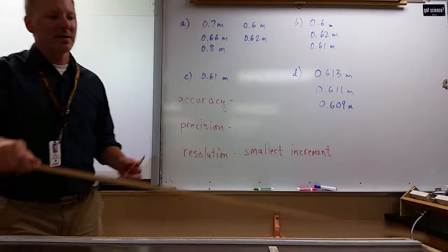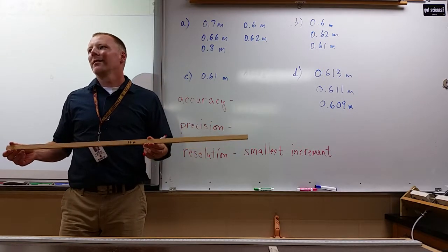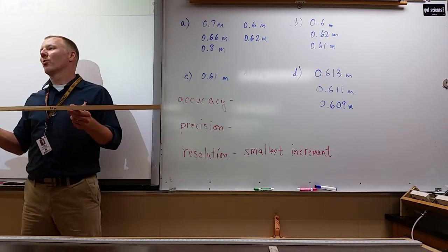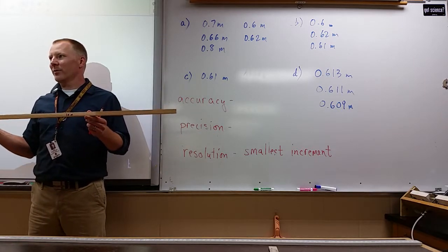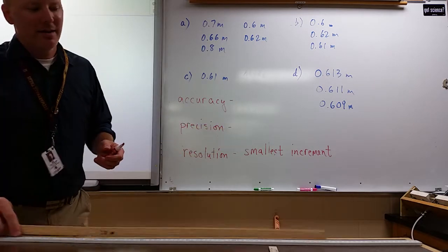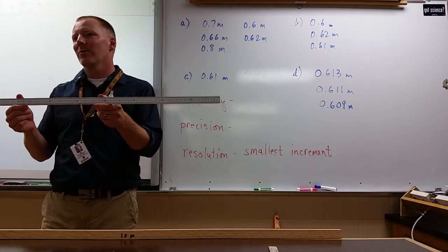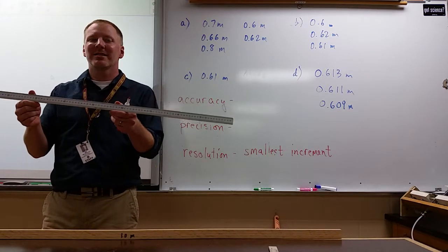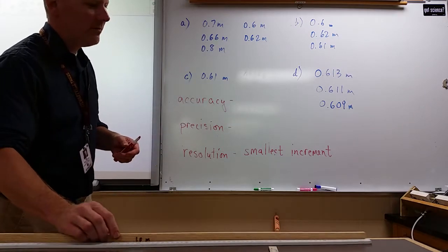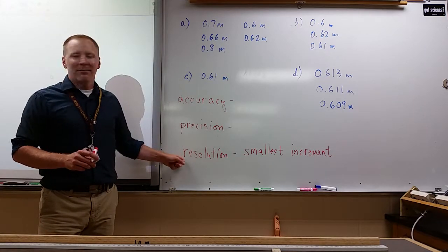Resolution is the smallest increment a device can measure, so the distance between the two nearest marks, and I'm just gonna put smallest increment up there. And we saw a big difference because the smallest increment on the first one was just one meter. That means that we're in some ways only allowed to measure to one meter. That's the physics way of doing things. When we get to finally that last one that was down to the millimeter, so 1,000 the size of our first measure.